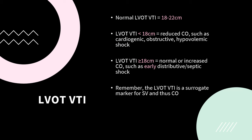The normal LVOT VTI measurement is 18 to 22 centimeters — a range to remember. If your patient is in shock, you can use the LVOT VTI to help differentiate the type of shock. In general, if the LVOT VTI is low, or less than 18 centimeters, this is consistent with cardiogenic, obstructive, or hypovolemic shock. If the LVOT VTI is normal to high — greater than or equal to 18 centimeters — this is most consistent with early distributive shock, typically sepsis.